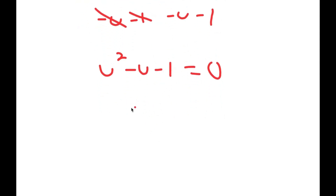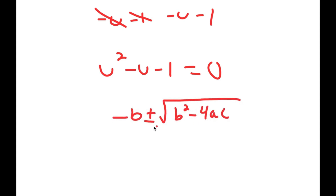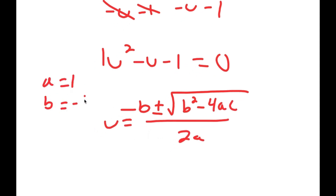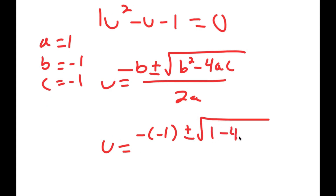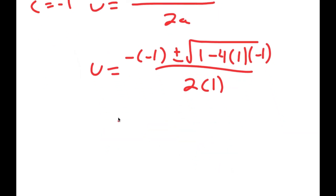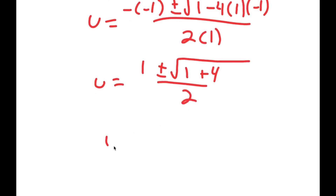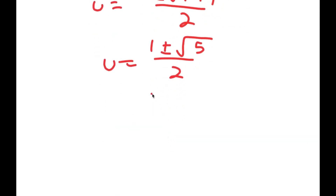Now to solve this equation, I'm going to use the quadratic formula, which is negative b plus or minus the square root of b squared minus 4ac, all over 2a. So in this case, a is 1, b is negative 1, and c is negative 1. So I get u is equal to negative of negative 1 plus or minus the square root of negative 1 squared, which is positive 1, minus 4 times 1 times negative 1, all over 2 times 1. This is equal to 1 plus or minus the square root of 1 plus 4 over 2, which is equal to 1 plus or minus the square root of 5 over 2.